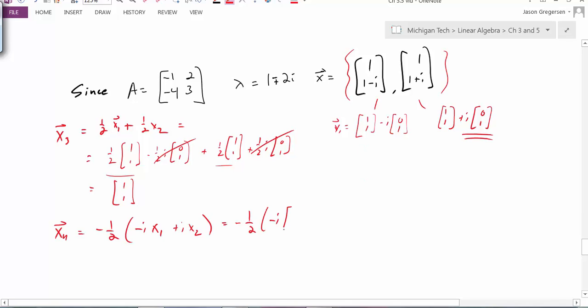well, I get negative i times x1. That would be a negative i times 1, 1. But then it would be a negative i times this. The negatives cancel out. But I'm still left with i times i, which is negative 1. And so I'm left with this piece. And I'm going to add my next piece here.